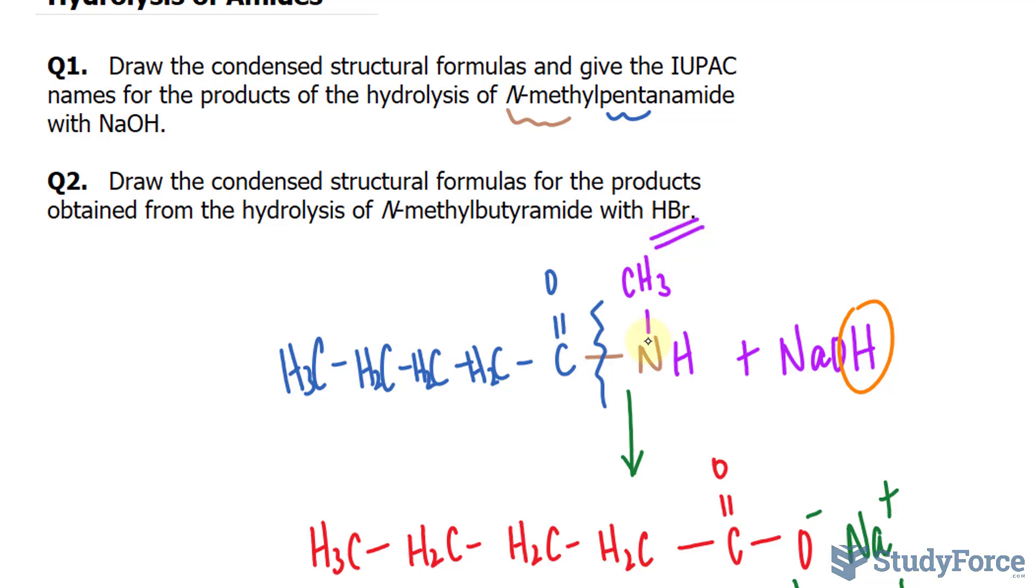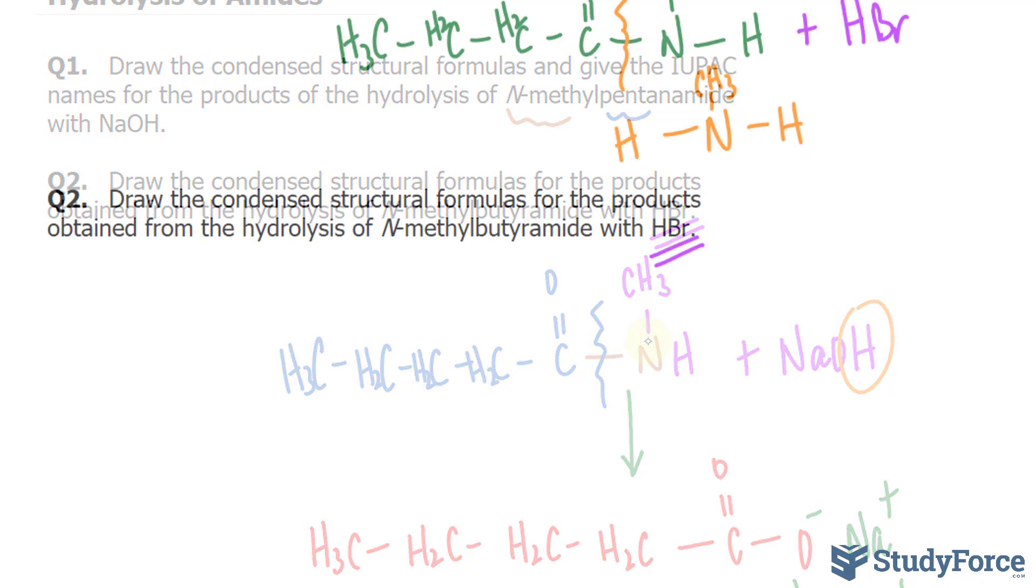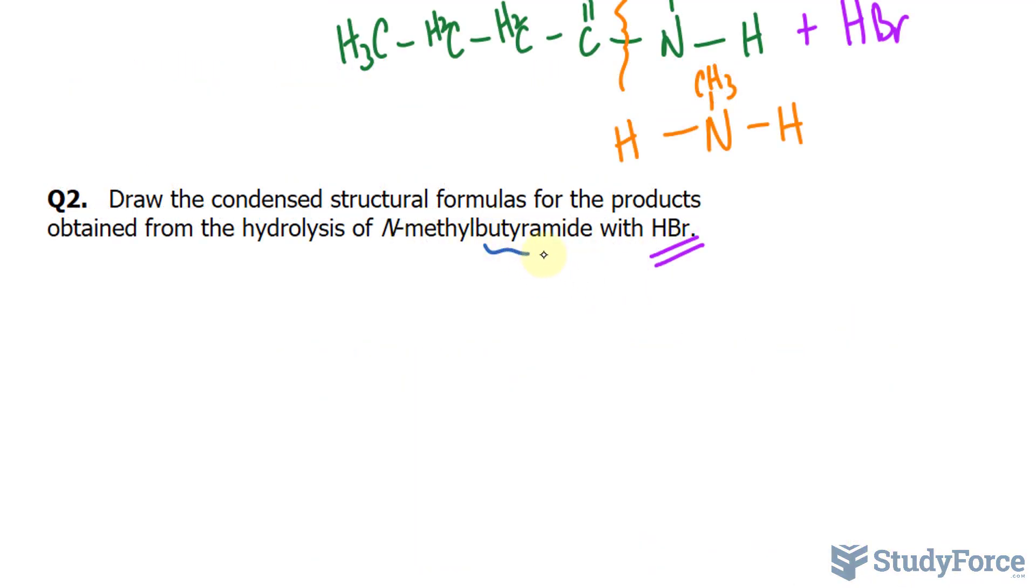Before we begin, amides undergo acid hydrolysis with heat to produce a carboxylic acid and an ammonium salt. Notice the difference here: we're producing a carboxylic acid as opposed to a carboxylate salt.